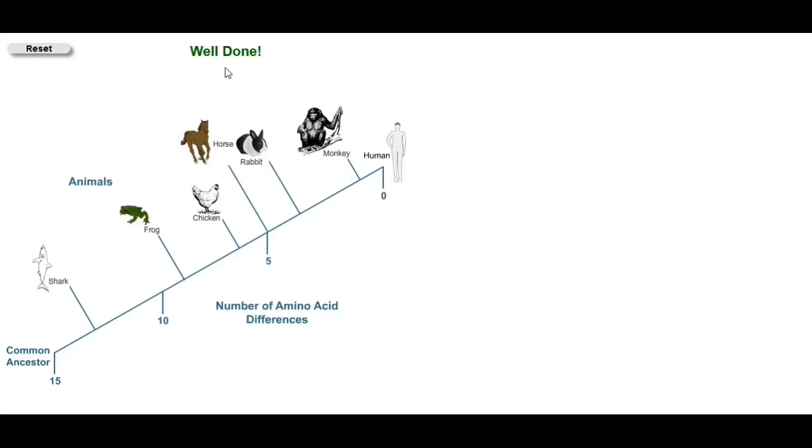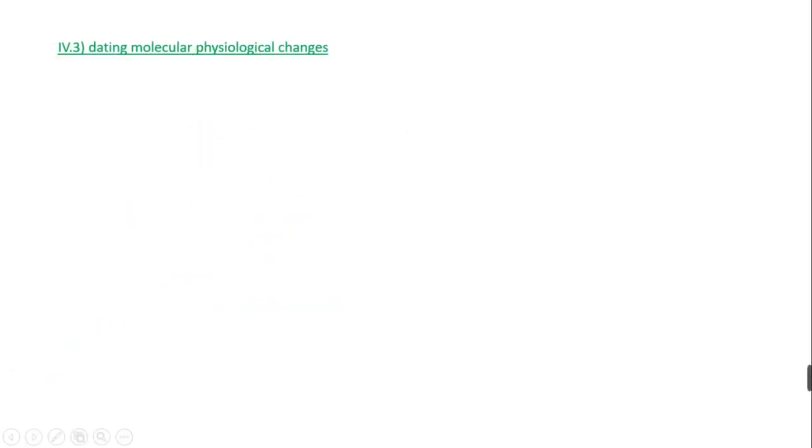And it can also give you some kind of timeline of when certain of these mutations occurred. 4.3, dating molecular physiological changes. To do that, I think the best thing is for you to have a look at the bac exercise, study of globins.